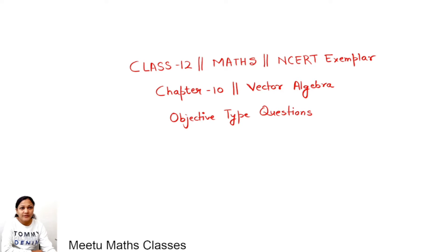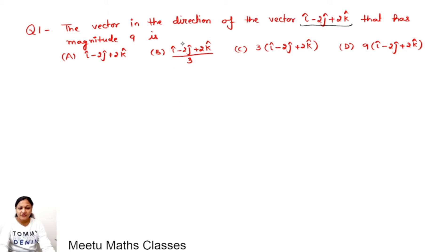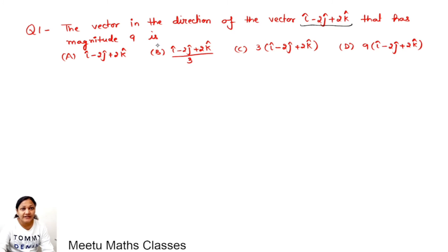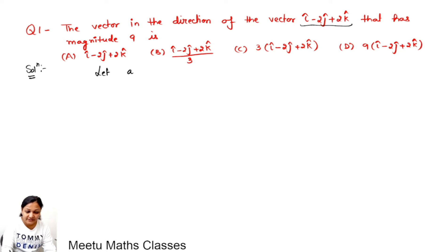Hello students, welcome to Maths Classes. Today we are doing Class 12 Mathematics NCERT Exemplar Chapter 10, that is Vector Algebra. Your first question is: the vector in the direction of the vector i minus 2j plus 2k that has magnitude 9. We are supposed to find a vector whose magnitude is 9 and in the direction of this given vector. Let this given vector be a = i minus 2j plus 2k.